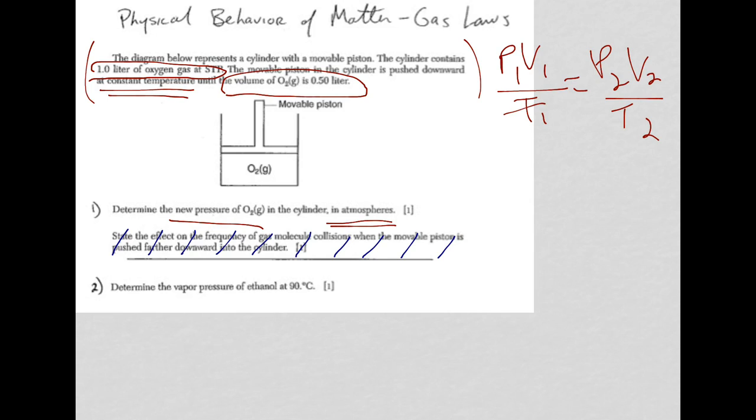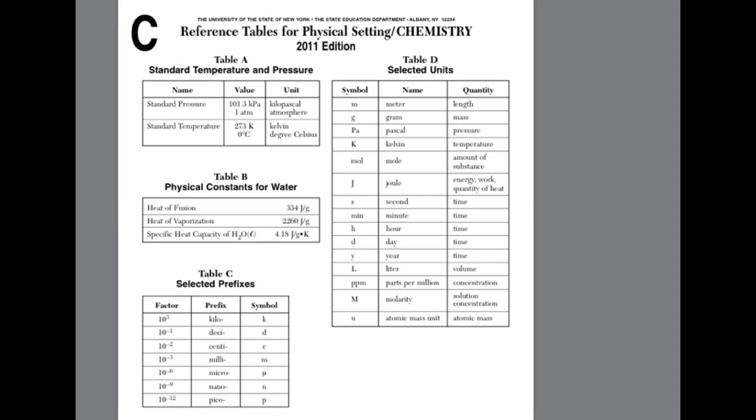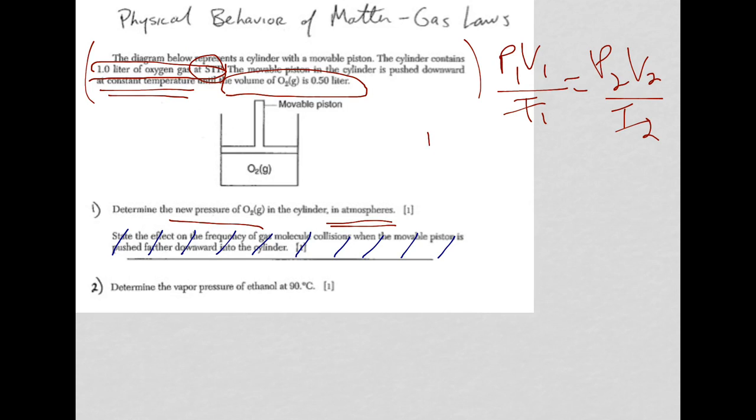So, constant temp, I cancel my temperatures, my initial pressure, I'm at STP, so I go to the front of the reference table, table A, and there's standard pressure. And I need atmospheres, because I'm told I want my new pressure in atmospheres. So I'm dealing with one ATM, and my starting volume was one liter.